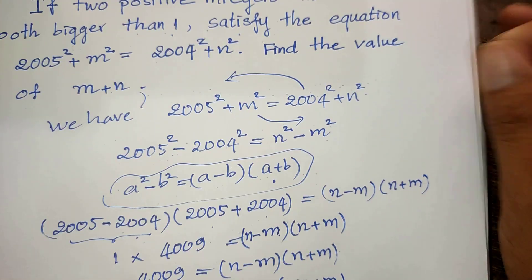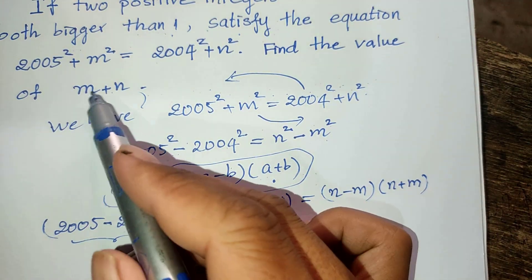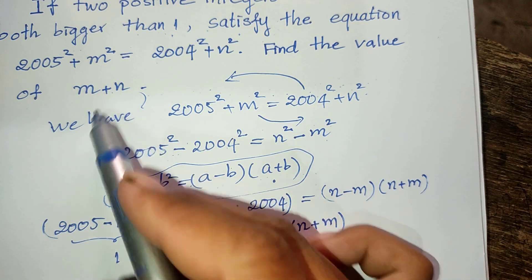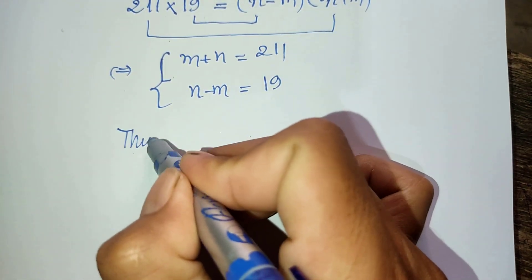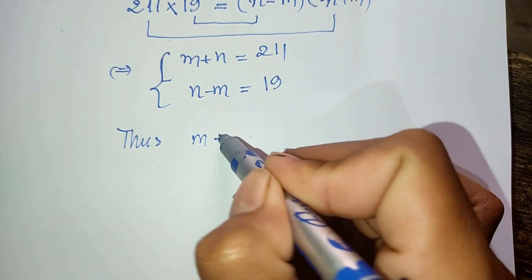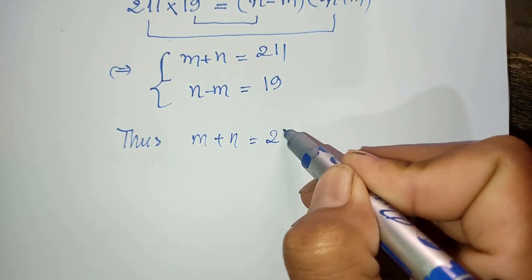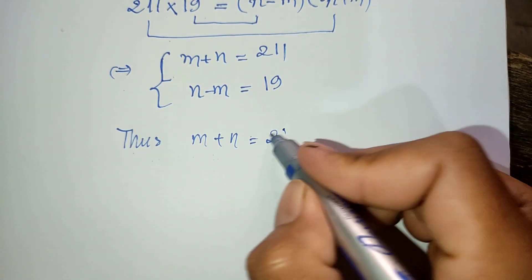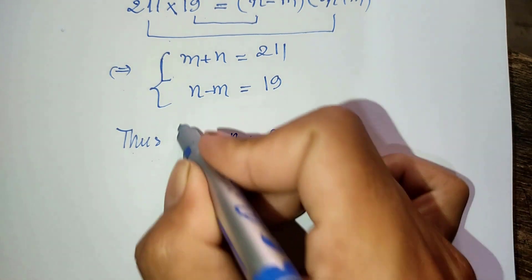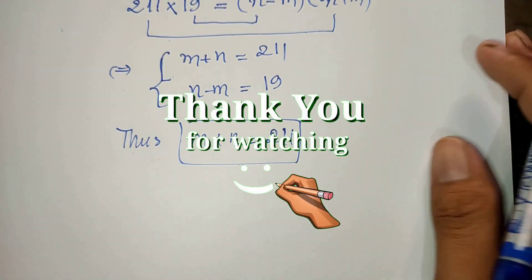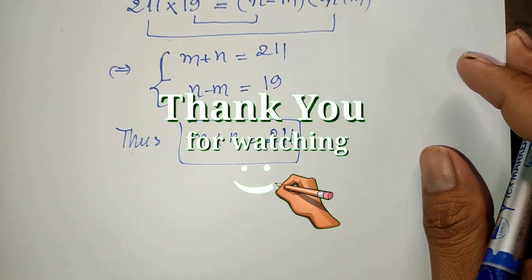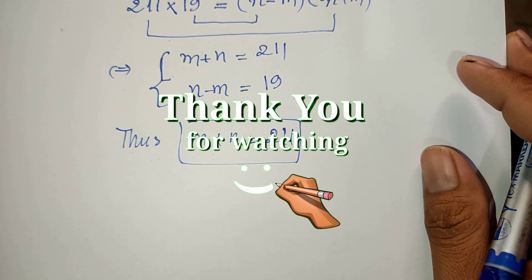So m plus n is equal to 211. Thanks for watching! If you like my videos, please don't forget to subscribe to my channel for more exciting videos. Goodbye!